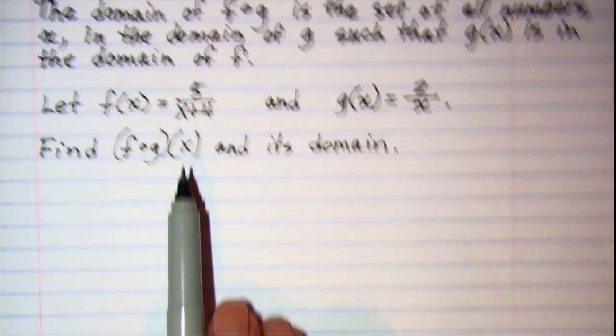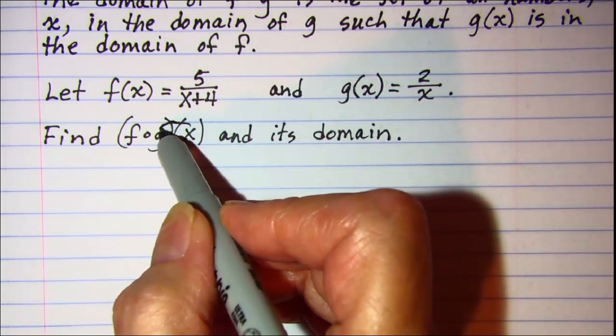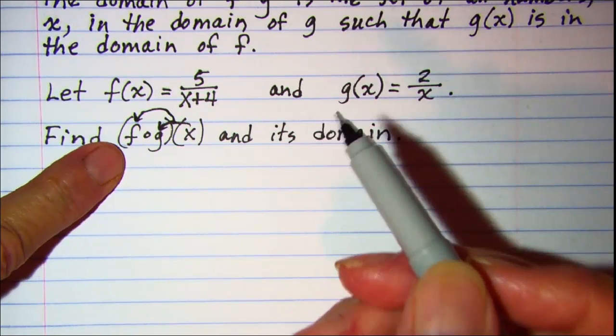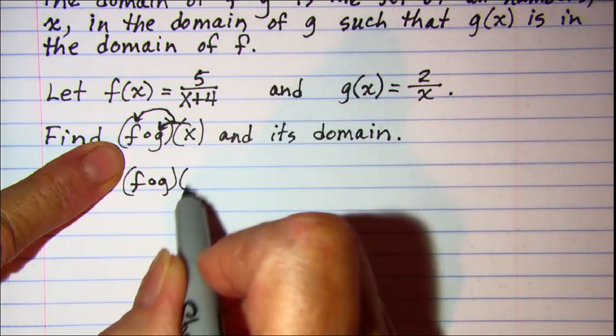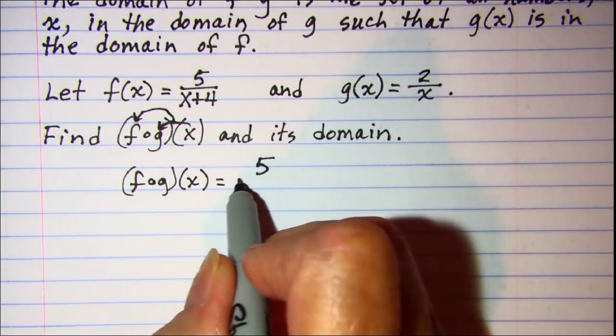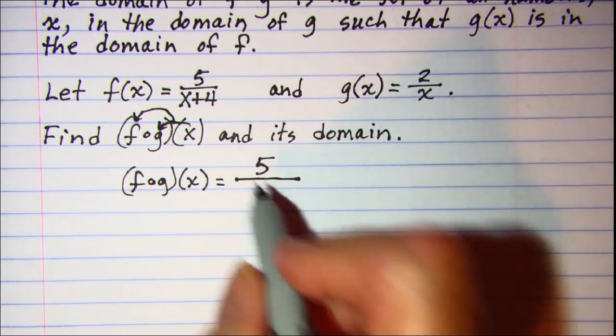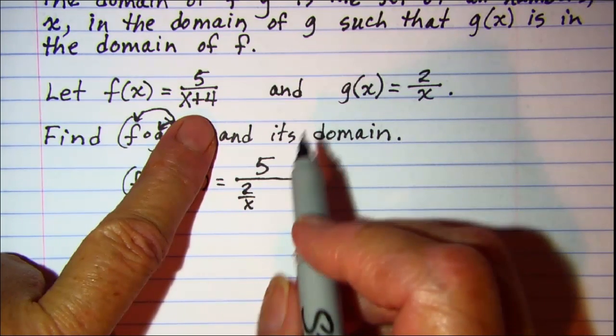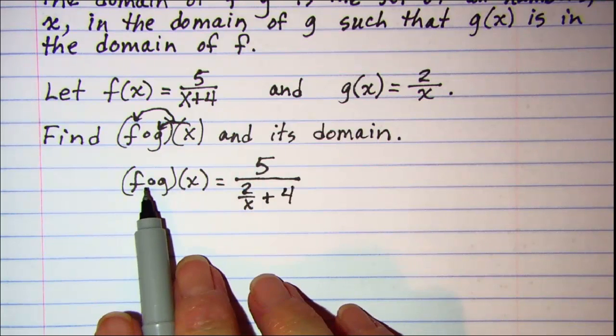Now let's find our composition function first. We put x into g and then that into f. We'll start writing f first and we have 5 over, and then in place of x we'll write 2 over x, and then continue writing our f. This is f composition g.